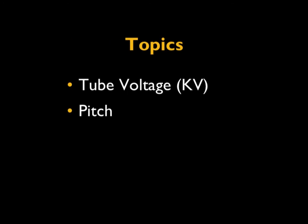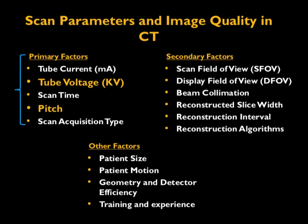Today's broadcast, I am going to talk about two important factors: tube voltage and pitch. Looking at this particular slide showing the various scan parameters that impact radiation dose and image quality in CT. The two primary factors are tube voltage and pitch, which have an impact on both the radiation dose and image quality in CT.